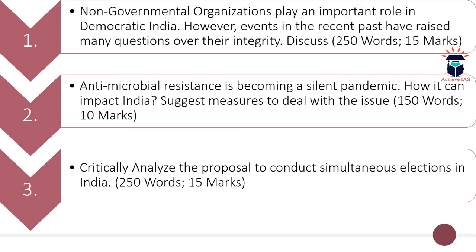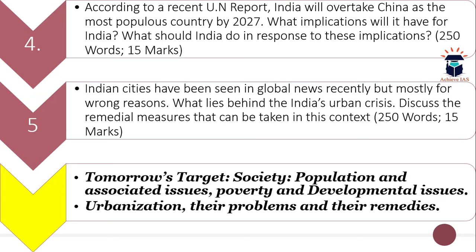The word limit for the third question is 250 and the maximum marks are 15. These are three questions from your dynamic part. The fourth and fifth questions are from your static part. The fourth question is: According to a recent UN report, India will overtake China as the most populous country by 2027 — what implications will it have for India, and what should India do in response?